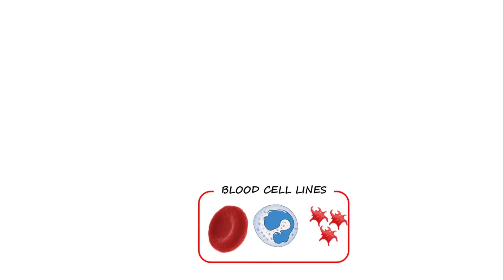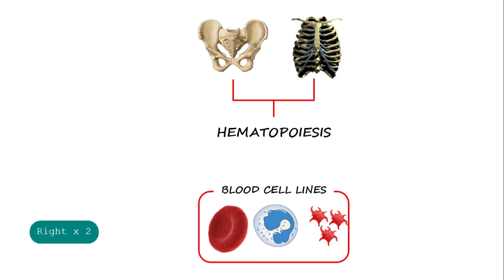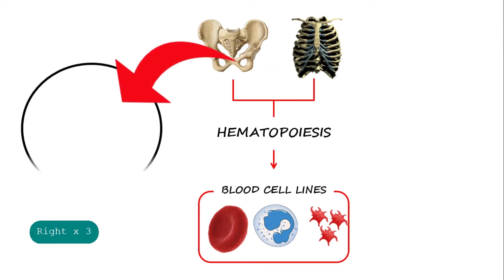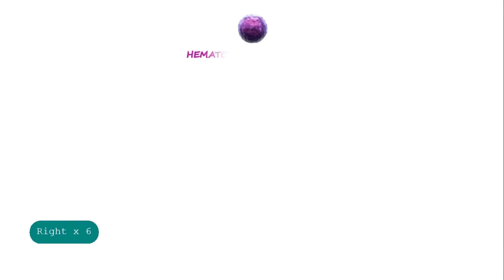Blood cells are produced in the bones of the body, mainly in the bones of the pelvis, ribs, and sternum through a process called hematopoiesis. This process starts in the bone marrow, the innermost portion of the bone, where the hematopoietic stem cells resided. This serves as the progenitor cells for all the different cell types found in the blood. In the process, hematopoiesis, also called hemocytoblast,